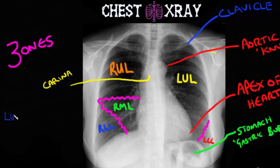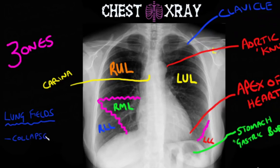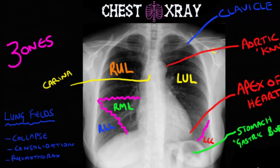We'll be doing more videos on pathologies seen on chest X-rays. When looking at the lung fields, you should consider whether there is any consolidation in any of the lobes, any collapse of those lobes, any pneumothorax — that is, air in the pleural cavity surrounding the lungs — or a tension pneumothorax with the trachea shifted to one side. Also consider whether there is any pleural effusion, which is a collection of fluid in the pleura compressing the lungs, or any pulmonary edema within the interstitium of the lung.